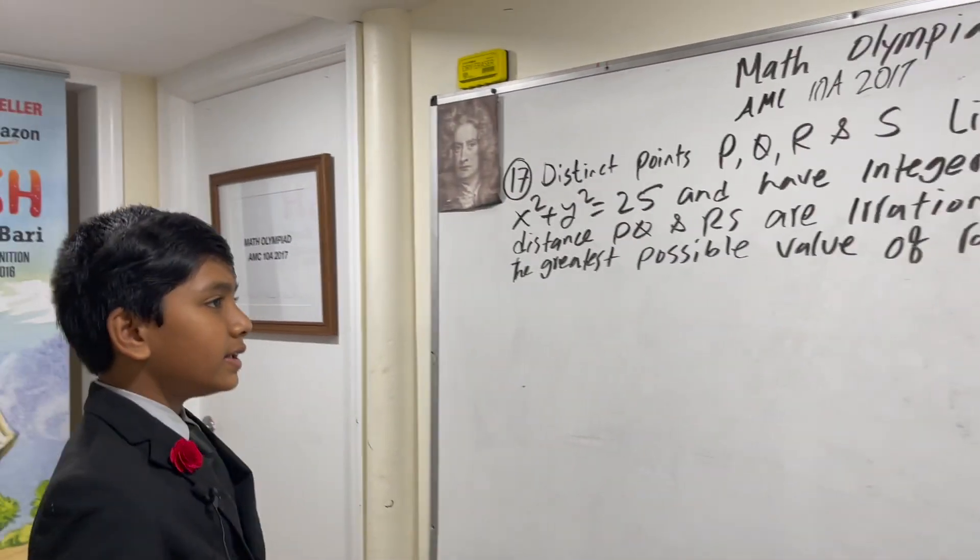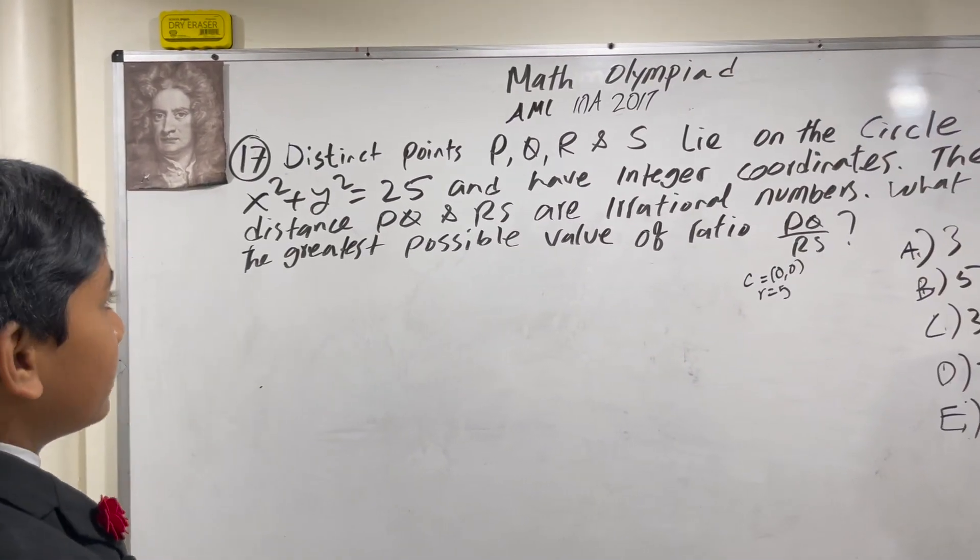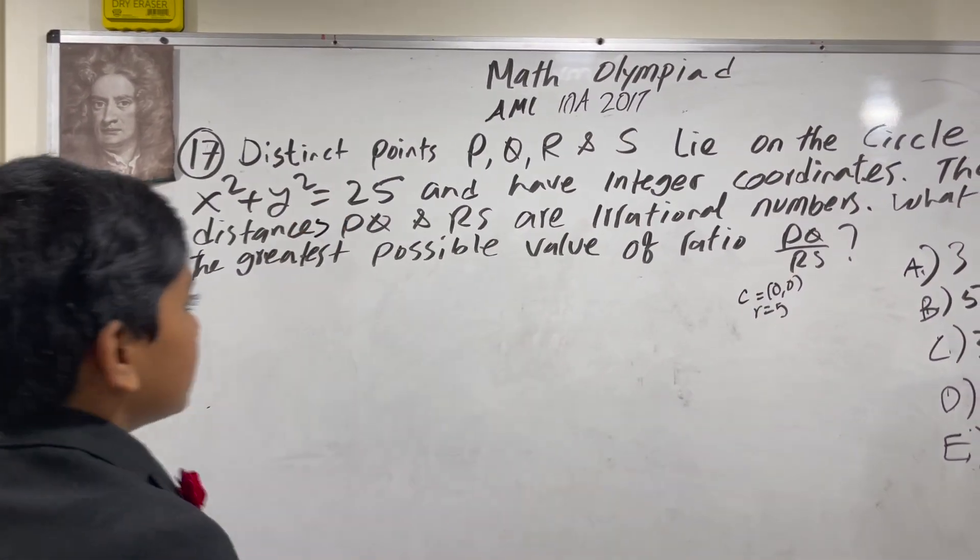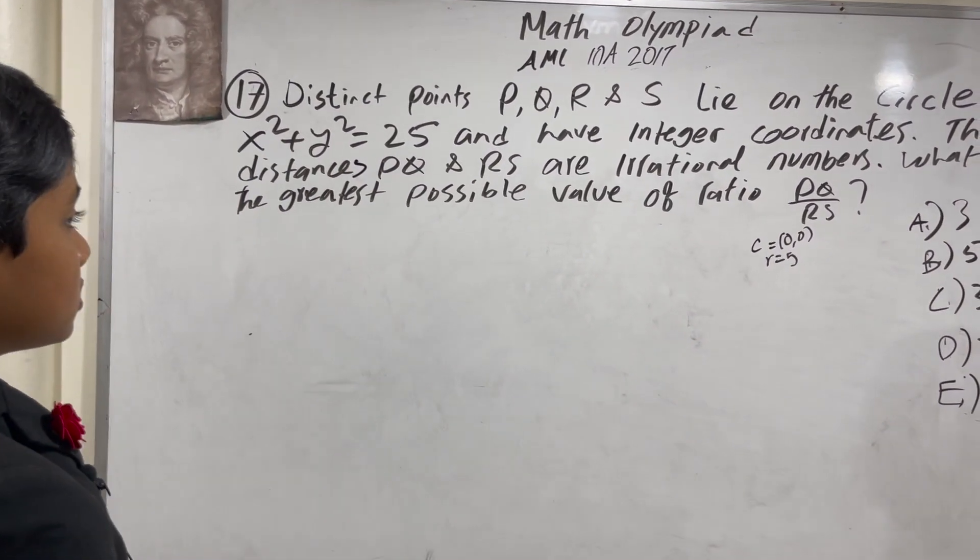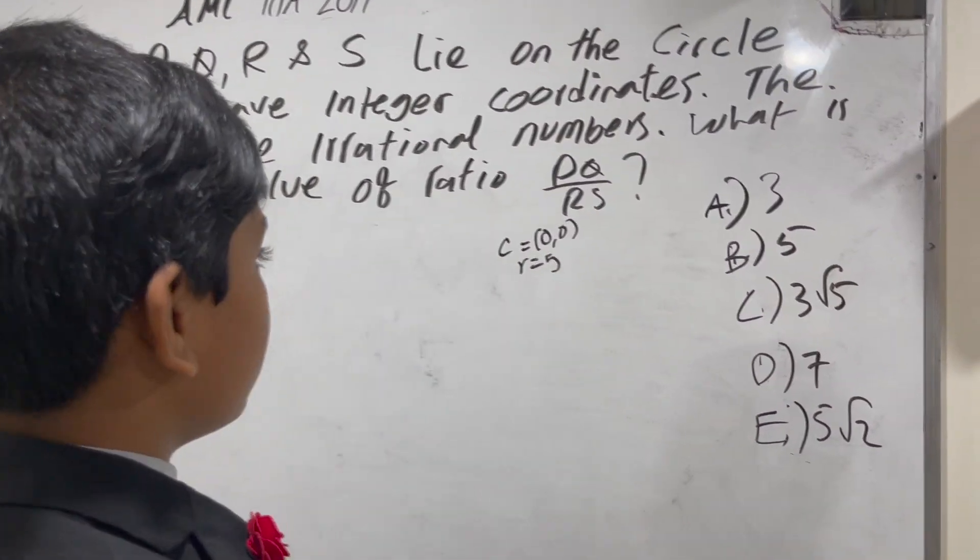And they have integer coordinates. Note that the distances PQ and RS are rational numbers. What is the greatest possible value of ratio PQ over RS?